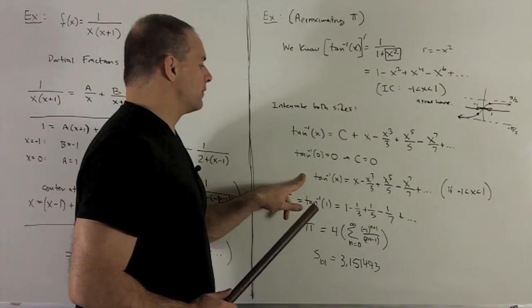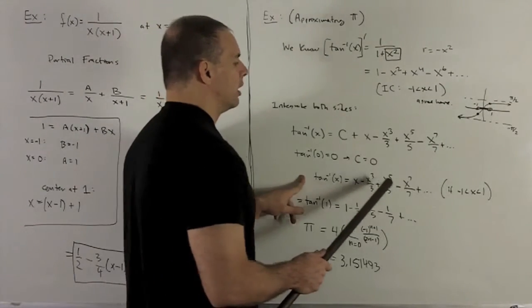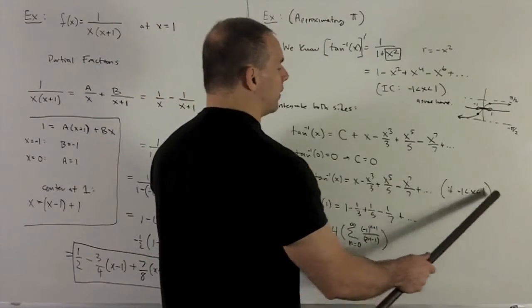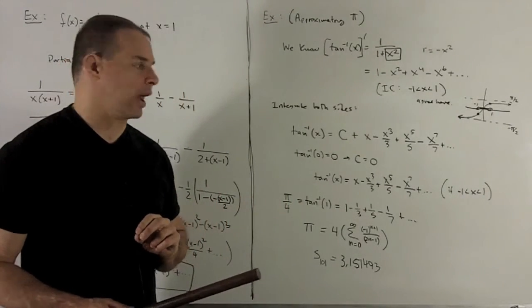So now I've got an expression for tan inverse as a power series. Now what I want to do, though, is I want to use one of the endpoints, but we don't have them yet. So I just have to do one little explanation, and then we're on our way.